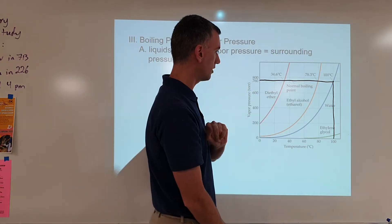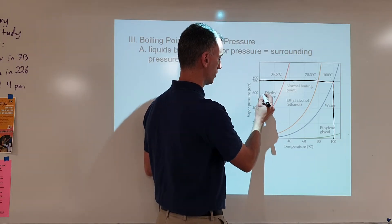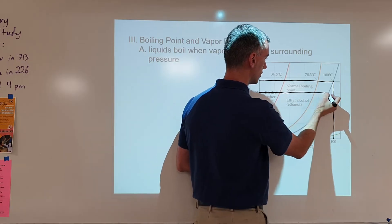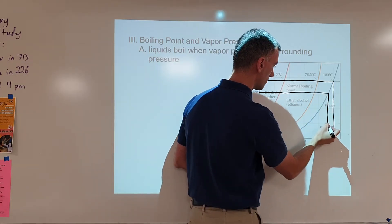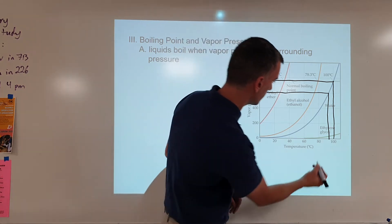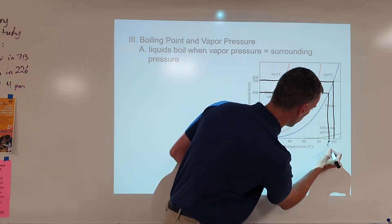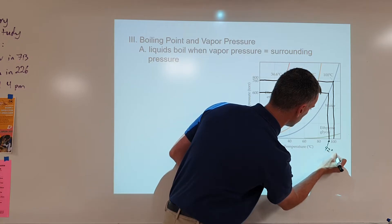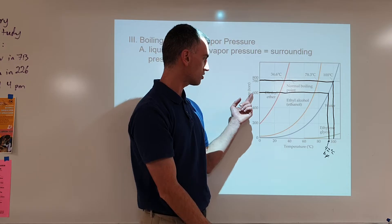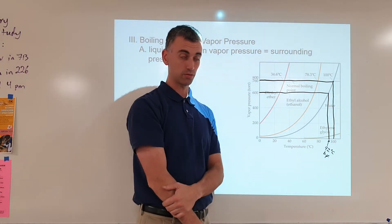What if I lower the pressure to 600 torr? Well, I trace it over to water, trace it down, and now instead of 100 degrees, let's see, it's just past 90, so I'll estimate it at about 92 degrees Celsius boiling point. So at 600 torr, water boils at only 92 degrees Celsius.